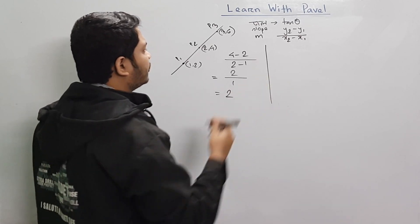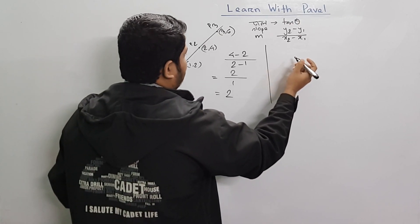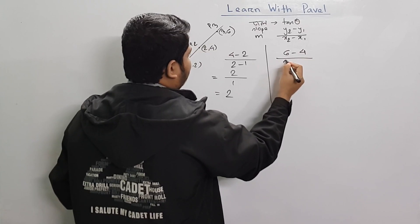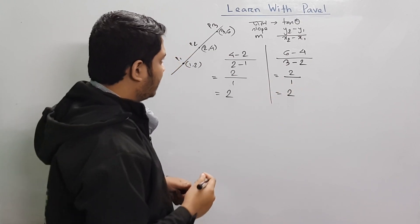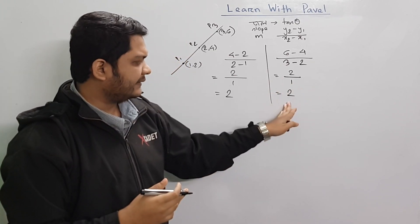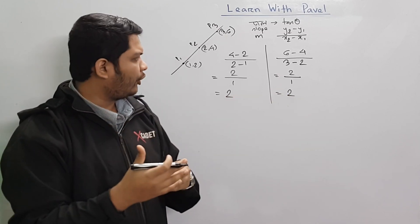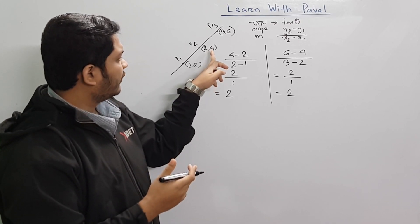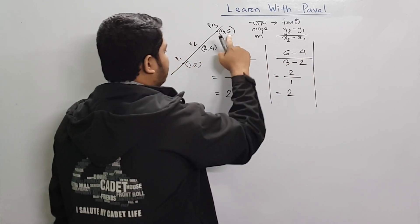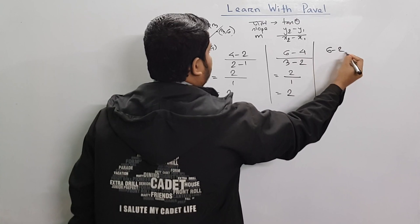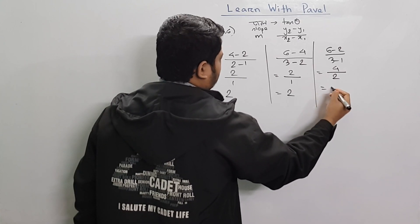We have a equal to 2. If P2 and P3, we have a equal to 1. We have a equal to 6 minus 4, so a equals 2. This is the same — both cases are the same. 2 is 2. So we can see there is 6 minus 2 and 3 minus 1, so 4 over 2 and the answer is 2.